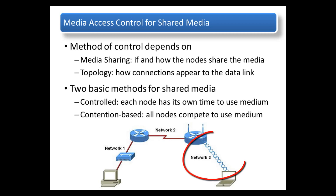The last network, Network 3, examines the media for the presence of a data signal. In this case, the shared medium would be the airwaves. Using CSMA/CA, when a device detects open airwaves, it will send a notification to all devices that it will be transmitting. It does this before sending the actual data to avoid collisions by telling all other 802.11 devices to listen.